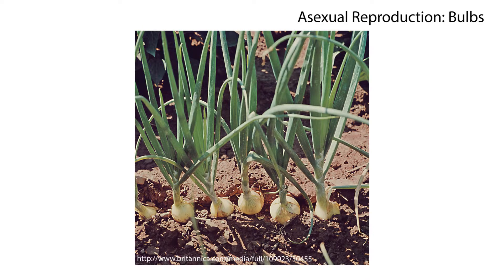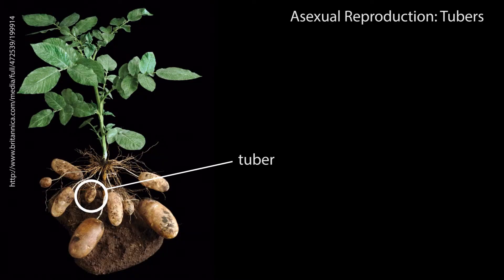Bulbs are another type of asexual reproductive structure. They contain the genetic information of the parent plant as well as nutrients for the offspring plant. Once the weather is optimal for the plant to grow, the plant utilizes the nutrients stored in the bulb. The final asexual reproductive structure is the tuber. Tubers are enlarged stems that grow underground and extend from the parent plant, and offspring can be produced from these fleshy stems.